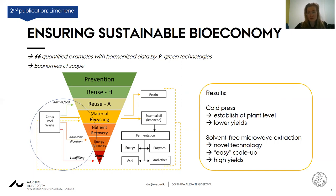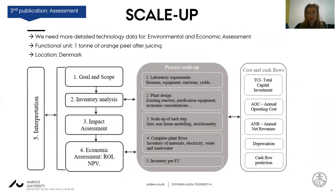In the third paper, we looked at these two technologies in a scale-up procedure integrated with environmental and economic assessment. Lygia and Aras helped us model from laboratory scale to already existing reactors, from non-linear to linear modeling and stoichiometry, arriving at a plant flow with detailed inventories for materials, electricity, waste, and wastewater. These inventories are translated to a functional unit of one ton of orange peels after juicing, located in Denmark — where location is important for the energy mix used in environmental assessment.